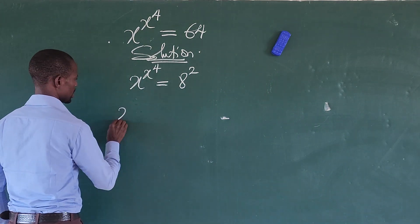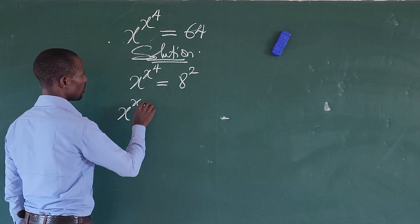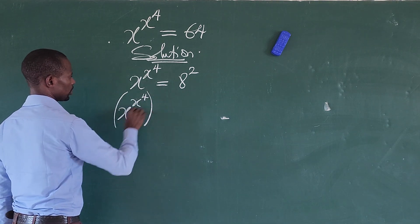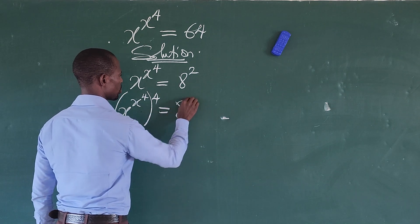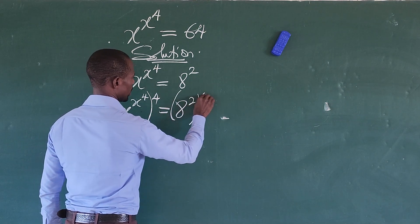So from here, let's raise both sides of the equation to the power of 4. If we raise this to the power of 4, we have this. Now we can only raise this to the power of 4.